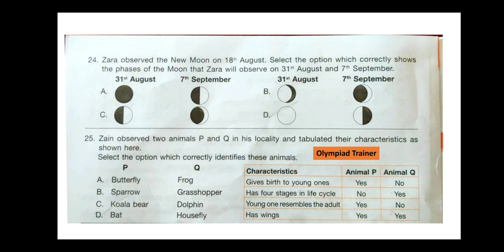Question 24. Zara observed the new moon on 18th August. Select the option which correctly shows the phases of the moon that Zara will observe on 31st August and 7th September. On 31st August it will be a full moon day, and on 7th September it will be a half moon. Question 25. Zara observed two animals P and Q and tabulated their characteristics. The correct answer is option D — animal P is bat and animal Q is housefly.